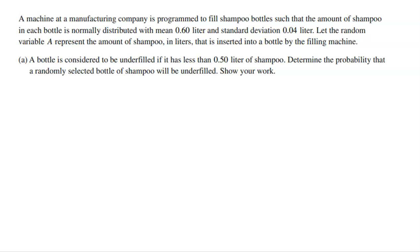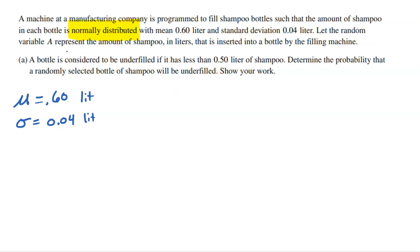A machine at a manufacturing company is programmed to fill shampoo bottles such that the amount of shampoo in each bottle is normally distributed. We love when something's normally distributed because we can use the normal model, which makes calculating probability much easier. It has a mean of 0.60 liters and a standard deviation of 0.04 liters. Let the random variable A represent the amount of shampoo in liters inserted into a bottle by the filling machine.